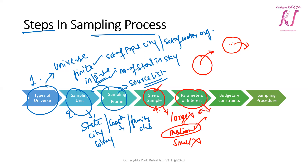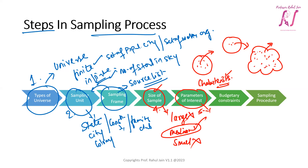The fifth step is parameter of interest. From the population, samples will be associated with some kind of characteristics. For election data, we need to select relevant characteristics. Samples should not all be male or all female; they should include younger, older, and middle-aged persons to create an average study. The sixth step is budgetary constraint — cost consideration is an important part and has a major impact on the sampling process.